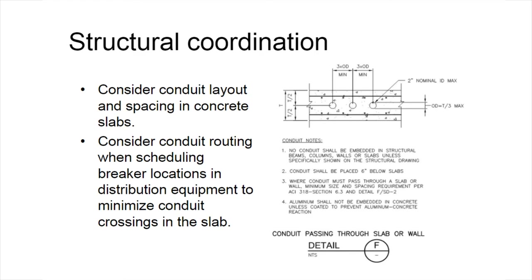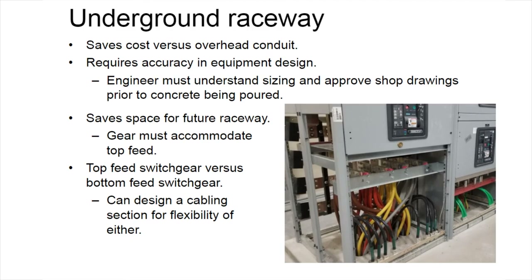A typical detail on electrical drawings ensures adequate spacing between conduits. Conduits should be three diameters on center and centered within the slab to maintain its integrity. When laying out electrical equipment, you want conduits routed properly to avoid crossing. When scheduling MCCs, make sure breakers or feeders are on the appropriate side so conduits turn off without crossing over other conduits.